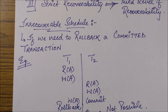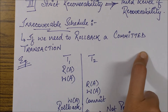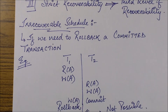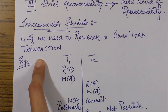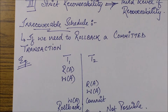An irrecoverable schedule is when rolling back a committed transaction is not possible. After a transaction commits, its log record — which contains the various changes performed before the commit — is removed from the database. So if I'm trying to roll back a committed transaction, I do not have its previous values, and I cannot undo my changes. That is why this schedule is termed irrecoverable.